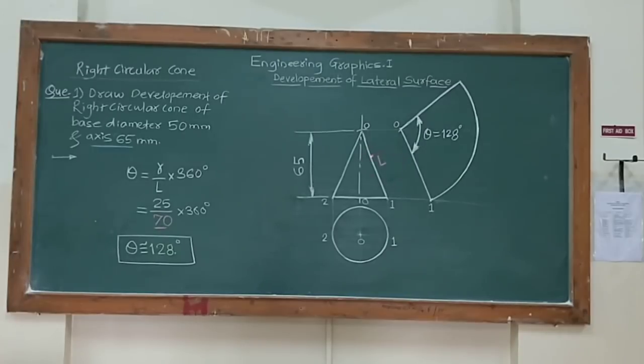So here we need L calculation, the generator length. Axis height is 65. So from drawing you will get to know this L is greater than this axis height which I have calculated as 70 mm. So this is O to 1 or O to 2.